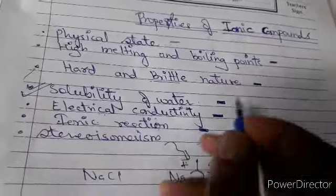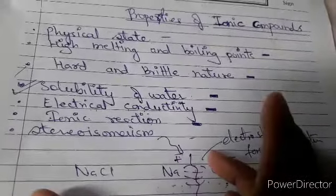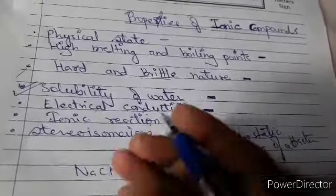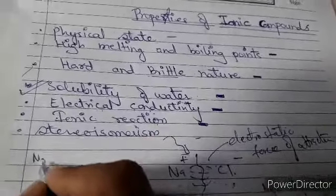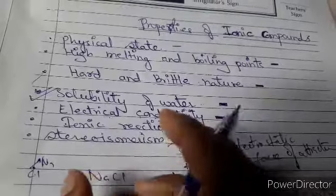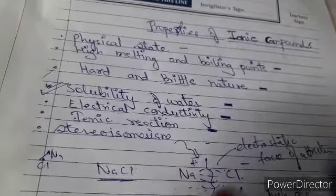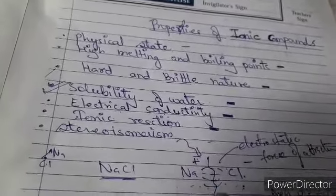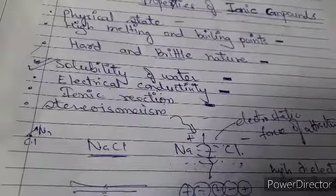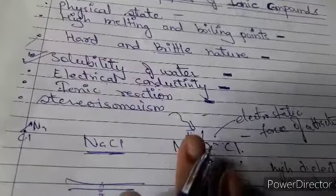Regarding electrical conductivity: in solid state, NaCl is a bad conductor of electricity. The ions are in fixed lattice positions and cannot move, so they do not conduct electricity. However, when dissolved in water (aqueous solution) or in molten state, the ions are free to move, making ionic compounds good conductors of electricity in those states.